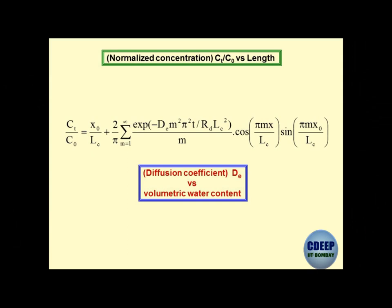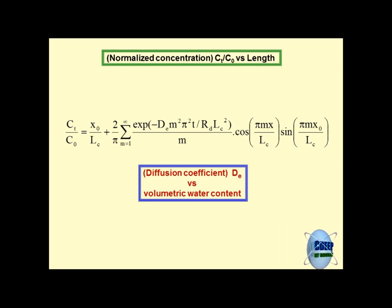There is another term hidden in the equation that nobody asked about: Rd. Truly speaking, Rd is a term relating to retardation - the fate of the contaminant. Rd basically talks about how retardation in the concentration of a chemical species is going to take place when it interacts with porous media. We will investigate this in detail later.